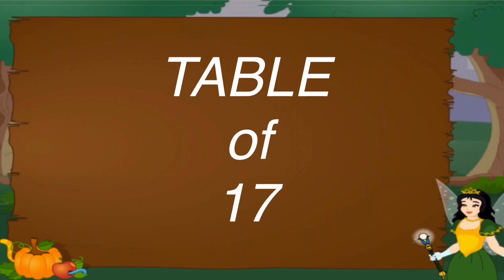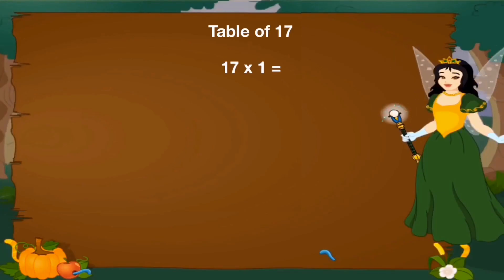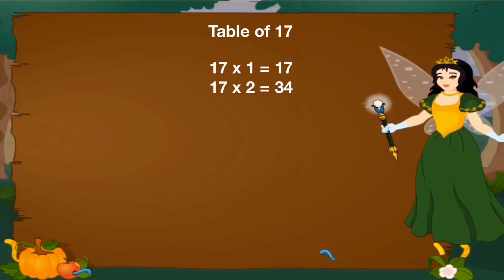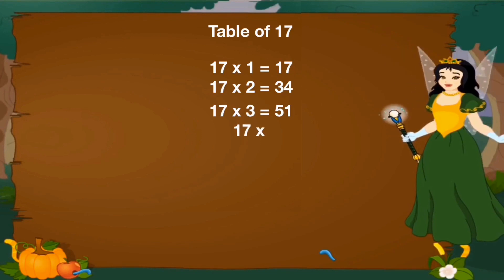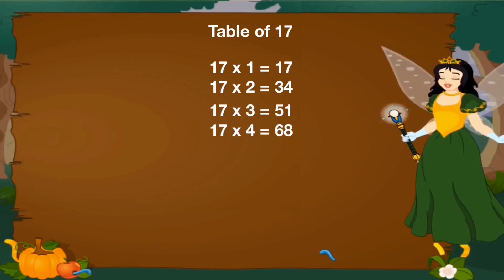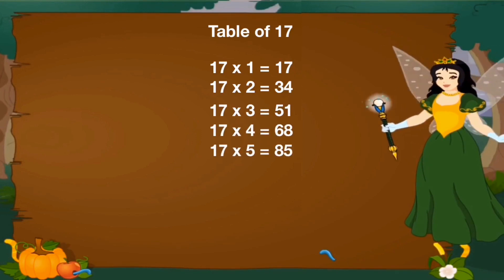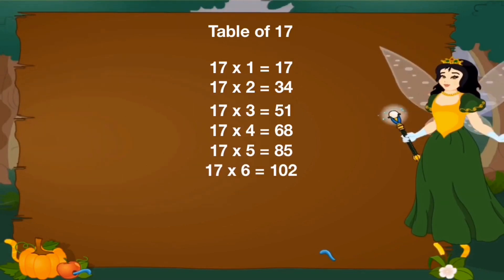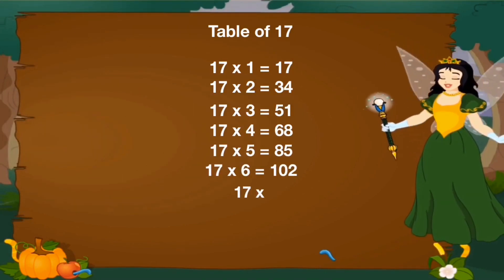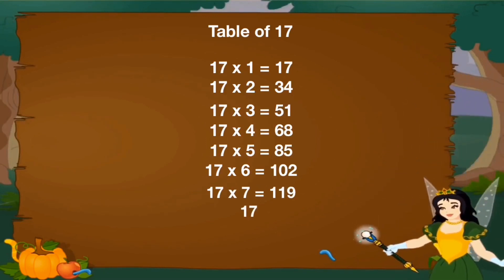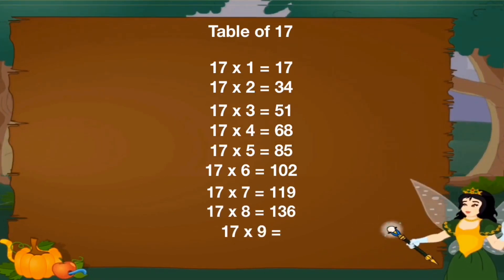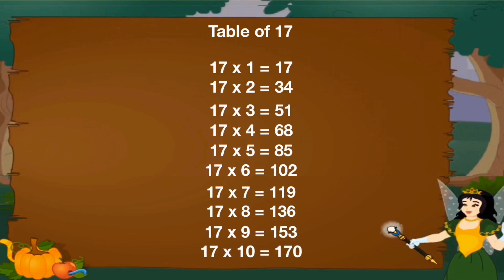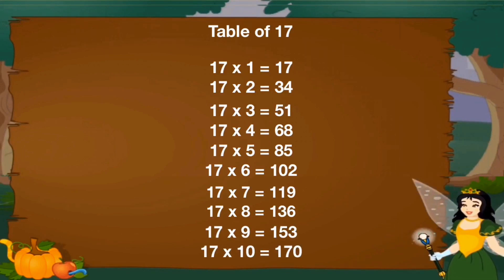Let's revise table of 17. 17 1's are 17, 17 2's are 34, 17 3's are 51, 17 4's are 68, 17 5's are 85, 17 6's are 102, 17 7's are 119, 17 8's are 136, 17 9's are 153, 17 10's are 170.